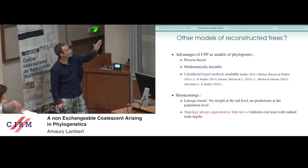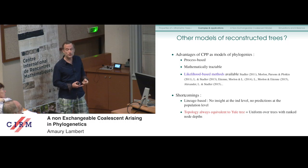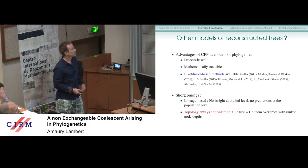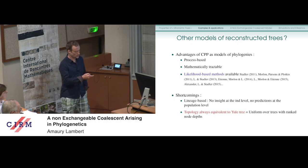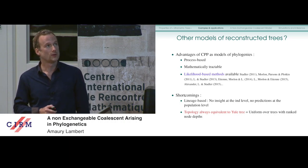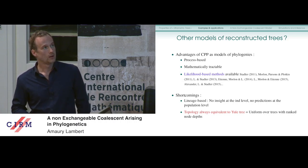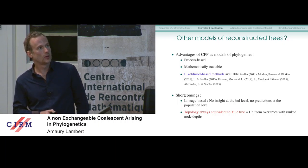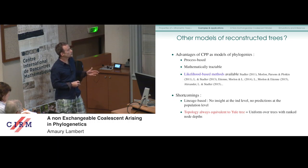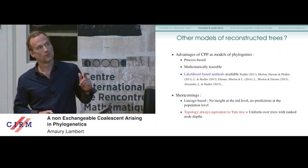Now I try to make the weak transition between the two parts of the talk. The nice features of coalescent point processes are that they are process-based — behind the coalescent point process there is a birth-death process — they are mathematically tractable since it's just a sequence of independent random variables, and they allow for likelihood-based methods. The shortcoming is that the models are lineage-based, ignoring what happens at the individual or population level. Also, the topology of all these trees is always the same — the shape of coalescent point processes is always equivalent to a Yule tree.